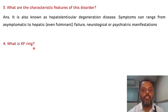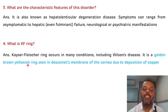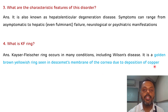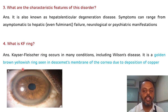What is a KF ring? The Kayser-Fleischer (KF) ring is seen in many conditions including Wilson's disease. It is a grey-brown to yellowish ring seen in the basement membrane of the cornea, occurring due to deposition of copper. It is the pathognomonic feature of Wilson's disease. In the picture, you can see a golden-brown yellowish ring in the Descemet's membrane of the cornea due to copper deposition.